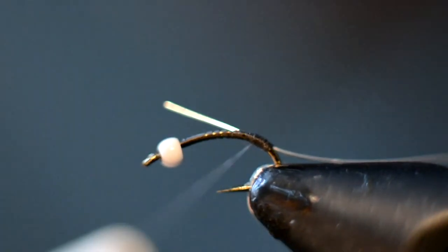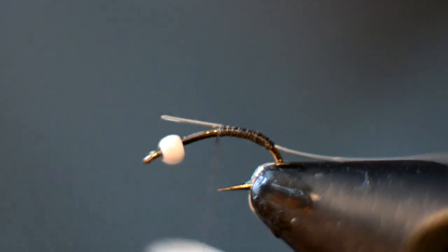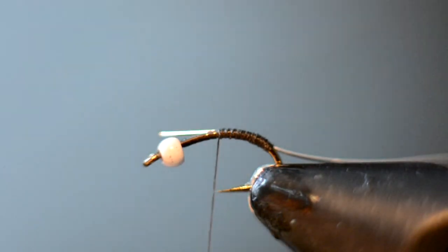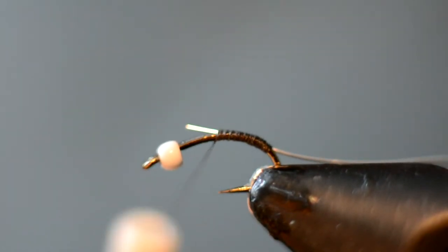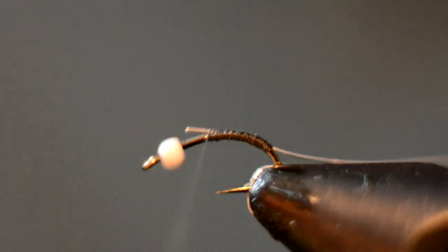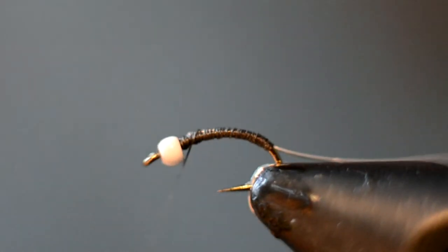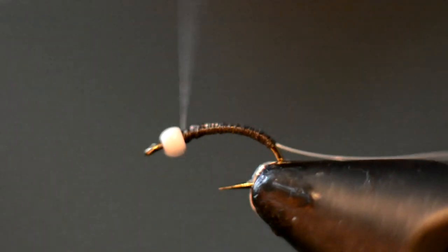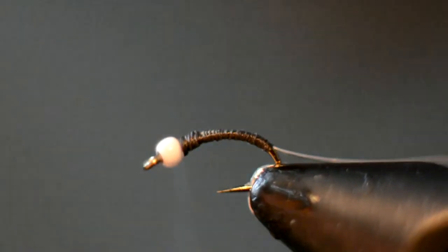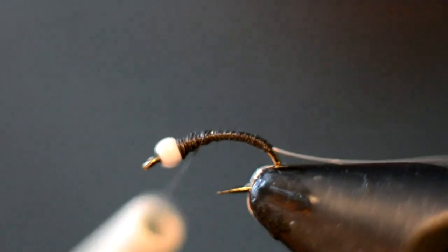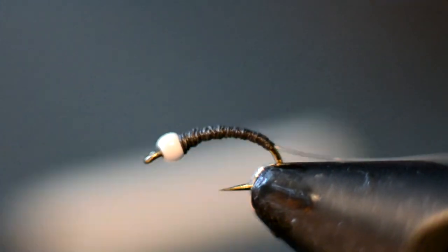You just want to be really careful making sure you work this body up evenly, and trim that tag out there. So we'll just cover up that wire and start working a taper up at the bead. We'll want to go ahead and build a nice thread base up at the bead, and then taper that back the rest of the way for the fly. Make sure everything is covered up. On my side I can still see some of that wire showing through the thread.